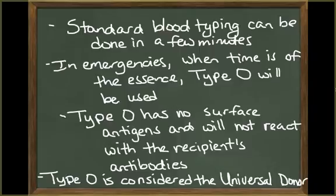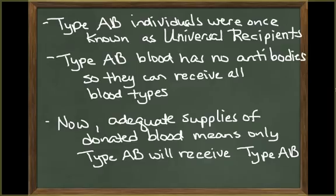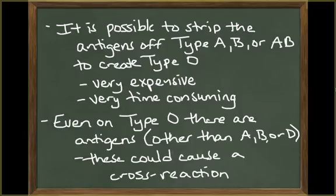Standard blood typing can be completed in a few minutes. However, in emergency situations when a person doesn't have a few minutes, type O, preferably type O negative, will be administered. Type O blood has no surface antigens and so will not react to any of the antibodies in the recipient's plasma. Type O blood is therefore considered a universal donor. Type AB individuals were once called universal recipients because their blood contains no antibodies in the plasma and therefore they would be able to receive any blood type. Now, because of the adequate supply of blood donors, a type AB individual will receive type AB blood.